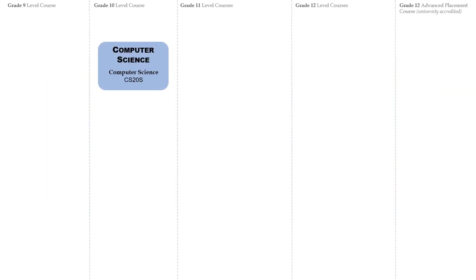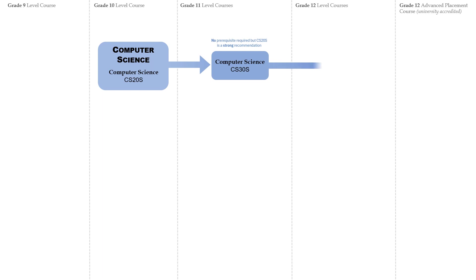Computer Science is an optional course that can be taken starting in Grade 9 or 10. The next levels of coursework progress from the previous courses.